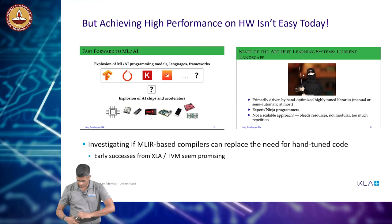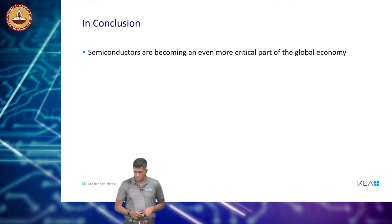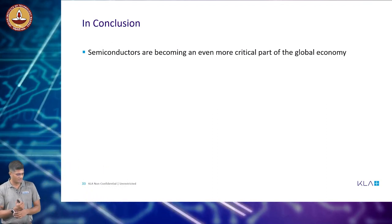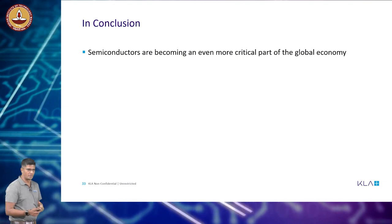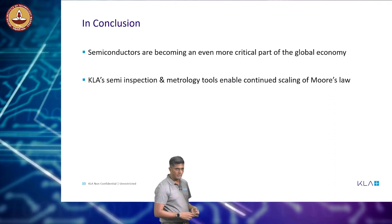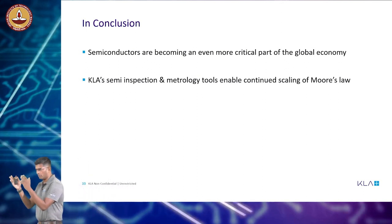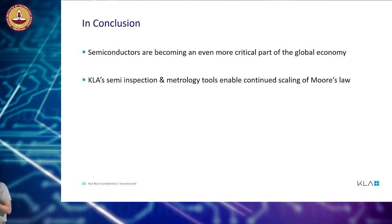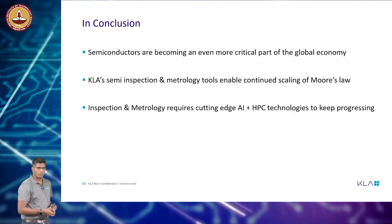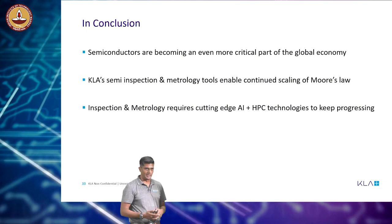That brings me to the end. As all of you are aware, especially through the pandemic, we heard a lot about semiconductors becoming a critical part of the global economy — and especially with India putting a lot of emphasis on semiconductor manufacturing. Our tools have really enabled the scaling of Moore's law: doubling performance every 18 months and doubling the number of transistors has been enabled by process control, because manufacturing cannot be accurate by itself. Our tools make sure that as long as you can control the process, you can continue to get good yield. We have started using really cutting-edge AI and HPC technologies to keep progressing, and this is only accelerating.